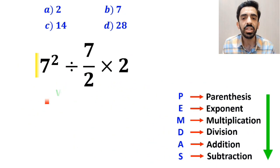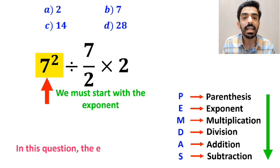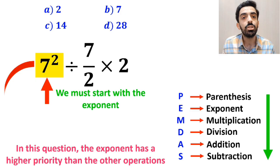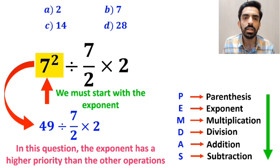Okay, first we start with the exponent, because in this question, exponent has a higher priority than the other operations. So, instead of this expression, we can write 49 divided by 7 over 2 multiplied by 2.